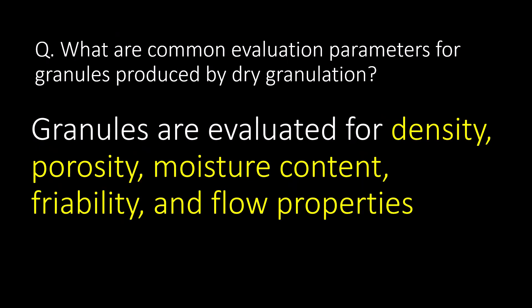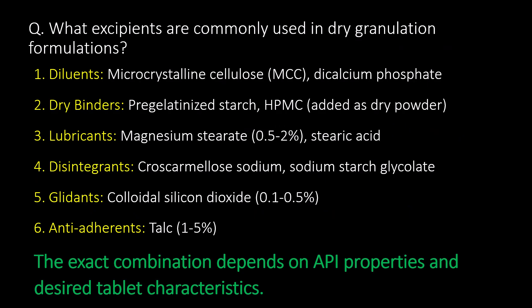What are common evaluation parameters for granules produced by dry granulation? Granules are evaluated for density, porosity, moisture content, friability, and flow properties. What excipients are commonly used in dry granulation formulations? Diluents, dry binders, lubricants, disintegrants, glidants, and anti-adherants are commonly used. The exact combination depends on API properties and desired tablet characteristics.